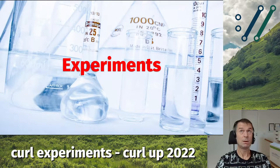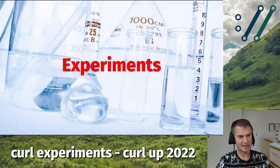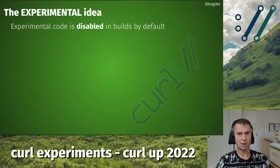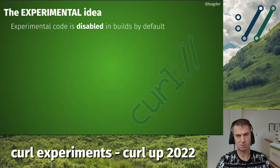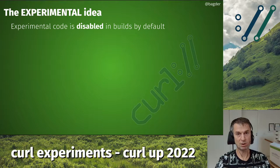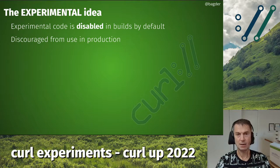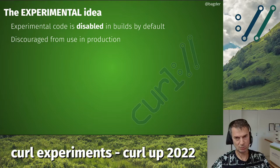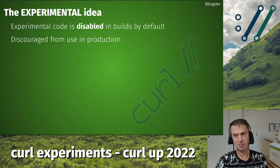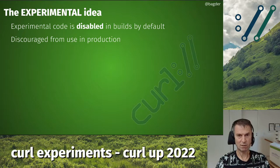A while ago — I don't actually remember exactly when — we introduced the concept of experiments in the curl project as a way to allow us to merge code earlier. It's disabled by default, but we merge it to allow people to actually build it, try it, not ship it, but experiment with it, see that it works, prove that it works, bring back feedback to the project so we can polish it, and once we remove the experimental label, enable it by default with higher certainty.